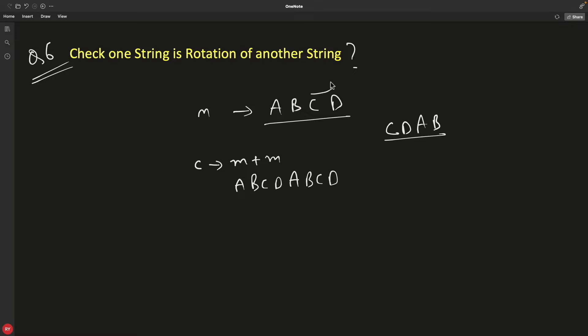You just have to search whether if this is your rotated string, then this should exist in this. And it does exist. See? C, D, A, B. Similarly, if this is the case, like D, A, B, C.